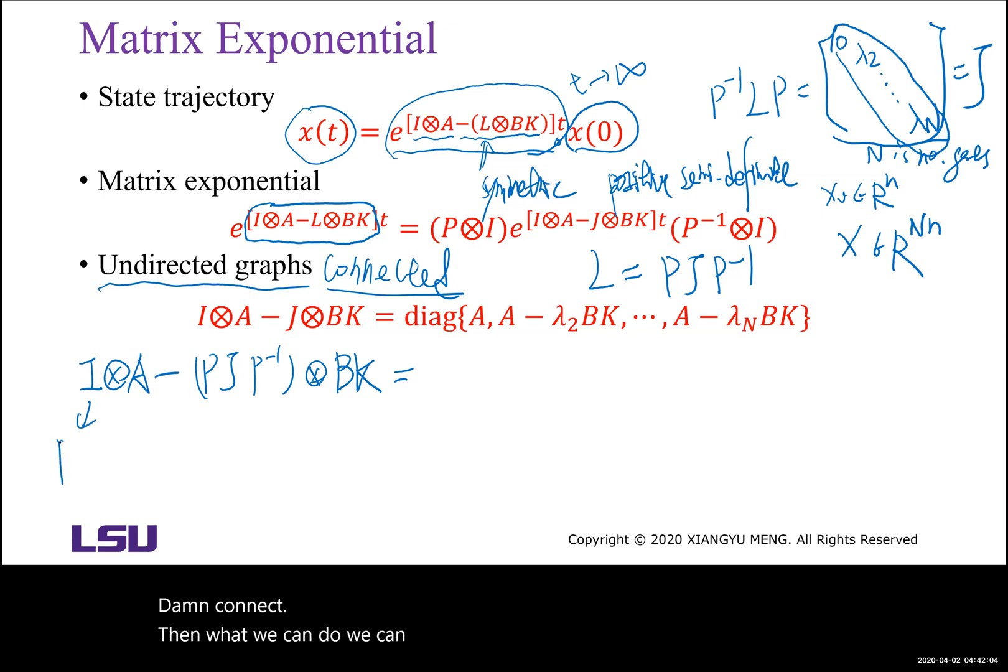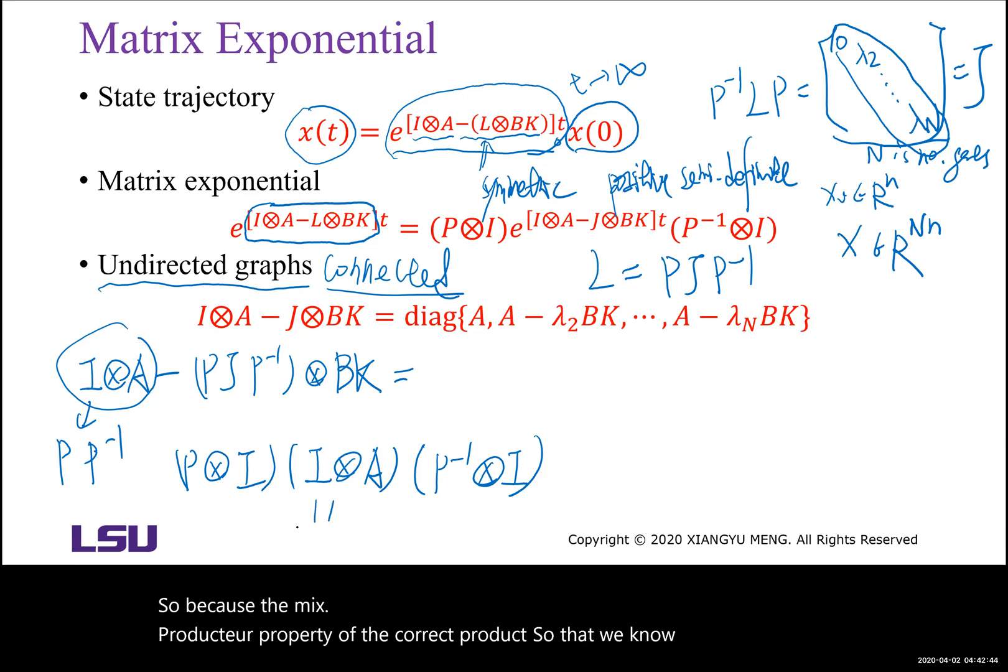Then what we can do, we can write the eigenvector matrix as P times P inverse. Then for the first term, P P inverse connect to block A, then that is P inverse connect identity.